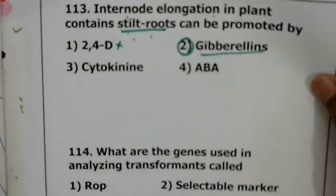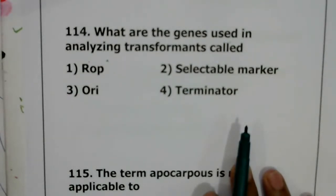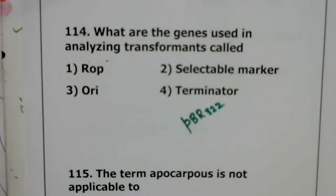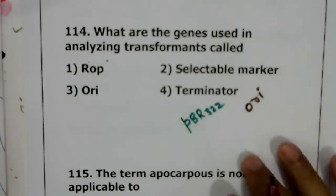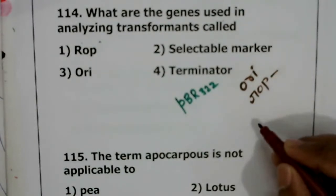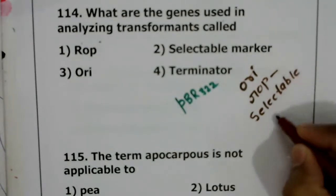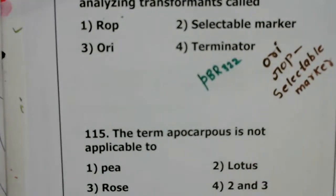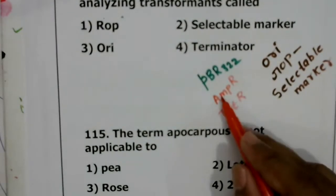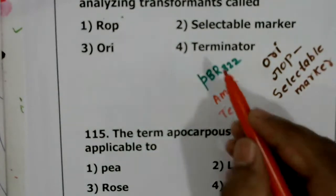Question 114: what are the genes used in analyzing a transformant called? In the plasmid pBR322, there is an ori (initiates replication), rop (repressor of primer), and two selectable markers — ampicillin resistant gene and tetracycline resistant gene. These selectable markers help in the selection of recombinants or transformants. The correct answer is the second option.